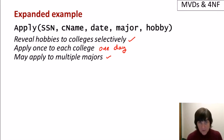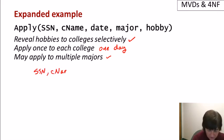It takes some thinking to come up with the right functional and multi-value dependencies to capture these constraints, but here they are. The first one when we say that we reveal hobbies to colleges selectively is actually the absence of a multi-value dependency on hobbies and colleges. The second one says we apply once to each college or on one particular day to each college. So that would say that when we have a particular student and a particular college, that's always going to have the same date. So any two tuples for a student and college combination will be on the same date.